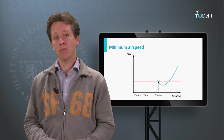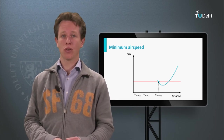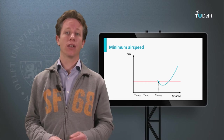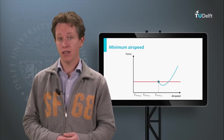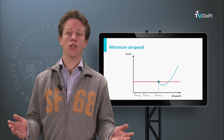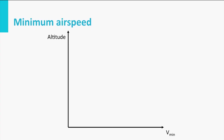So, the minimum airspeed in steady horizontal flight can in fact be limited by the available power. Now that is an interesting phenomenon! So let's draw the minimum airspeed as a function of altitude. The minimum airspeed you would expect based on the airspeed equation, CL max and the air density, looks more or less like this. At some altitude, the power limit will become dominant, as indicated here.